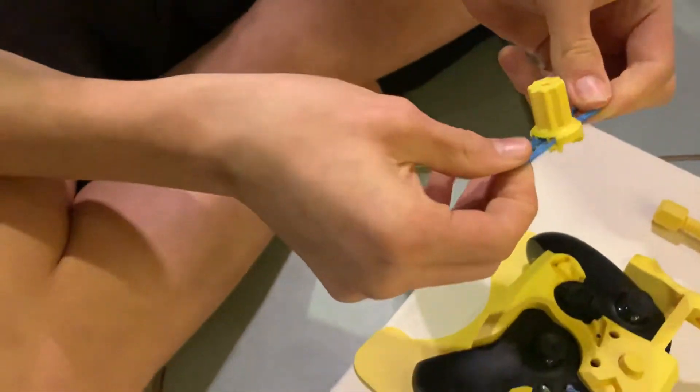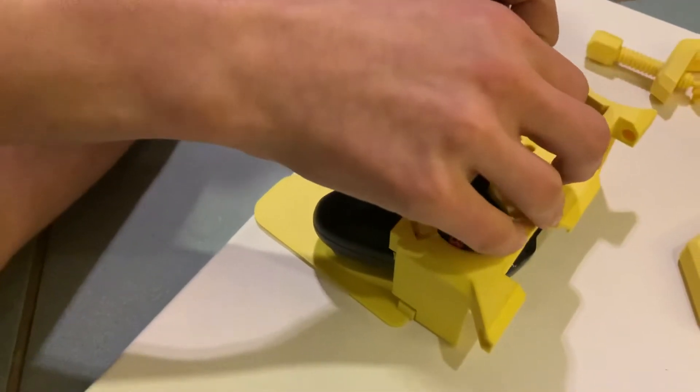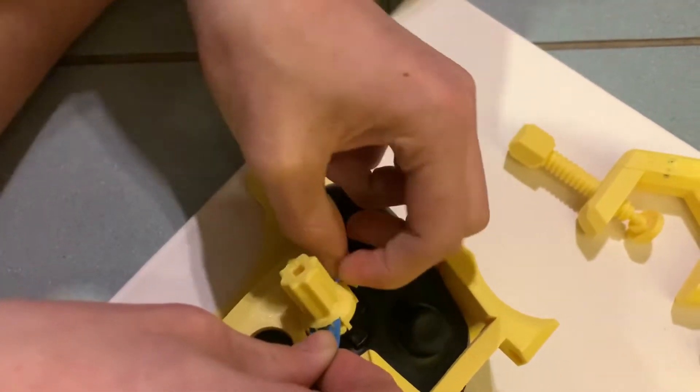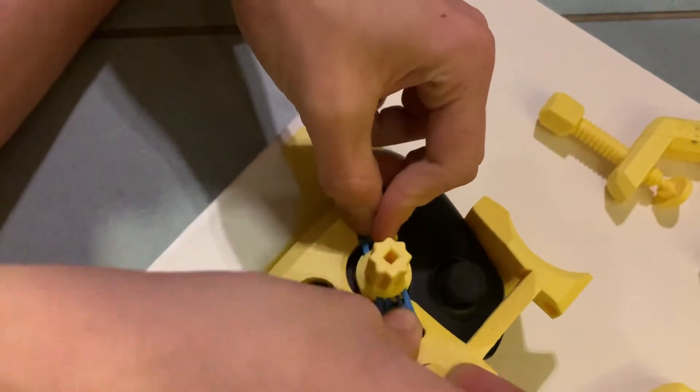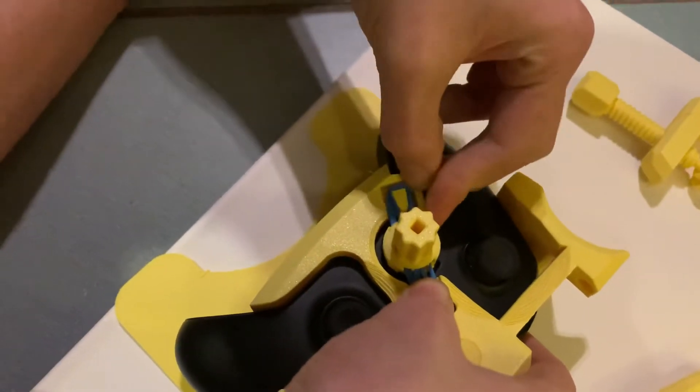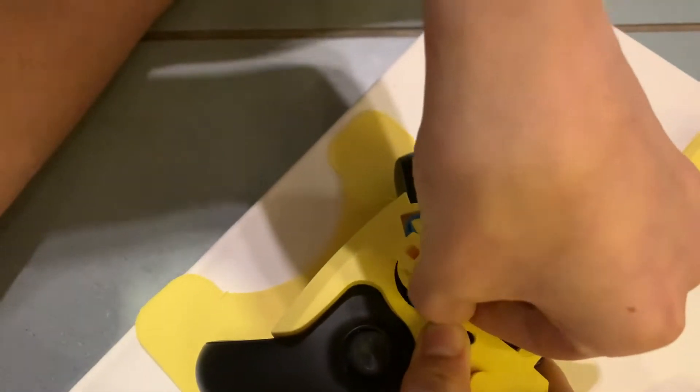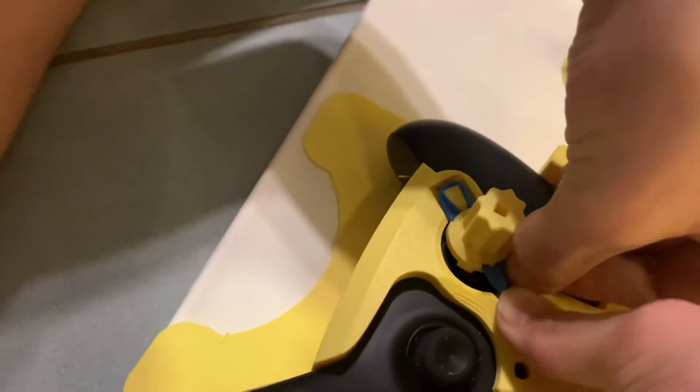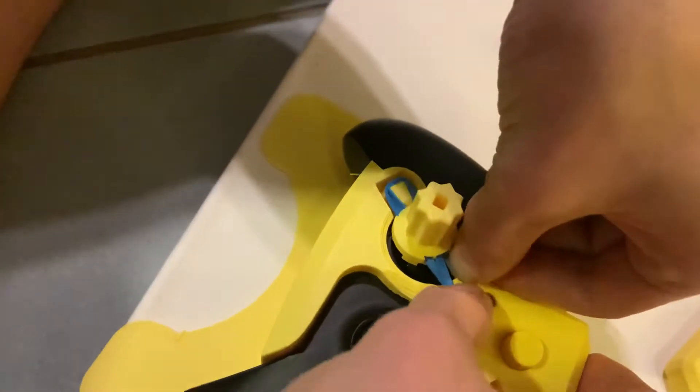So, once this is done, you just take it and put it on the little pegs. I'm aiming for both little things to go on. So, once this is on, I'll just get this one on as well.